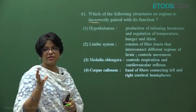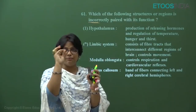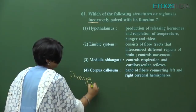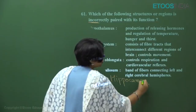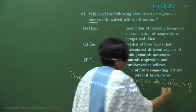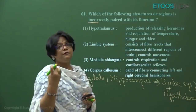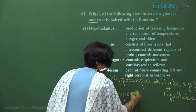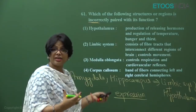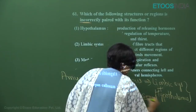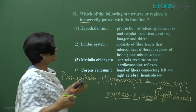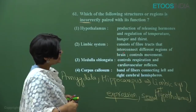Limbic system — the option states it consists of fiber tracts interconnecting different brain regions and controls movements — this is incorrect. The limbic system includes structures like amygdala and hippocampus and, together with the hypothalamus, regulates emotional expressions, sexual arousal, and related functions. So the limbic system option is incorrectly matched.